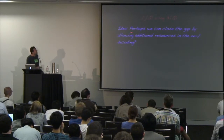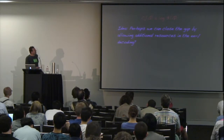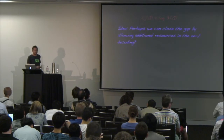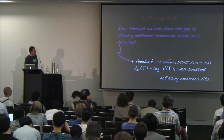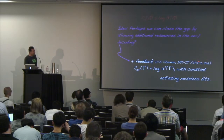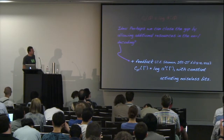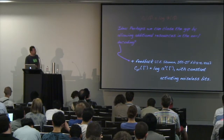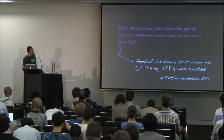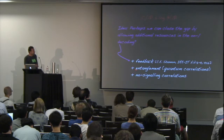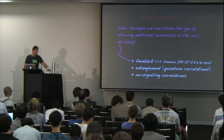Rather than improving the upper bound, another attitude is to make the quantity better behaved by giving some resources for free. Shannon himself, in the first paper on zero-error capacity, allowed instantaneous feedback over each channel use, and showed the corresponding zero-error capacity with feedback equals the log of the fractional packing number. The resources we want to consider here are entanglement and no-signaling correlations.